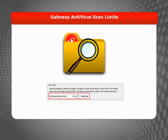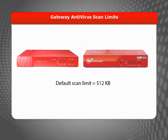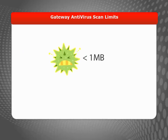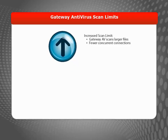The default scan limits vary by device model. For most Firebox and XTM devices, it's 1,024 kilobytes. The default for the Firebox T10 and XTM 2 series is 512 kilobytes. Remember that most malware is delivered in files smaller than 1 megabyte in size, so larger files are less likely to spread quickly in a viral manner. Because of this, we recommend that you use the default scan limit setting. If you increase the scan limit, Gateway AV scans larger files, or partial files, and could result in fewer concurrent connections through your Firebox or XTM device.